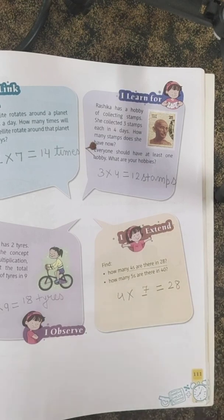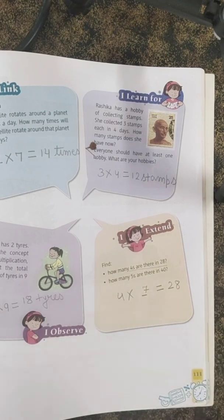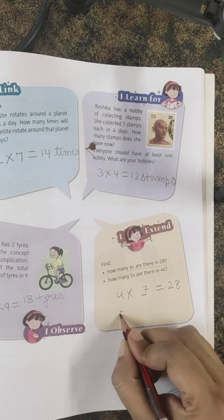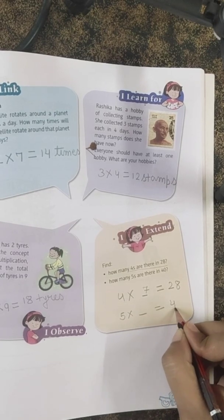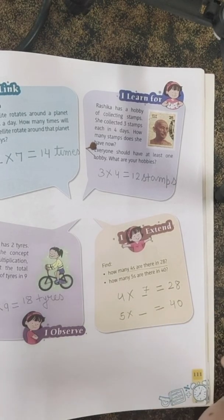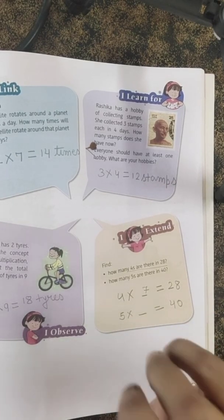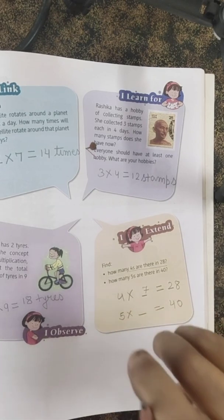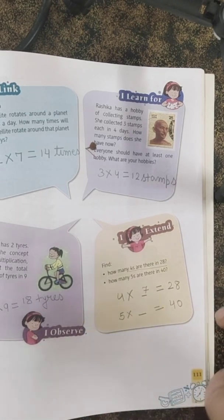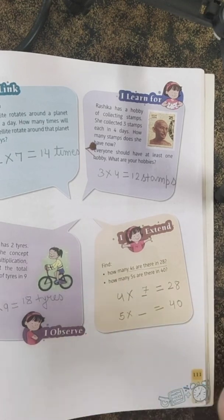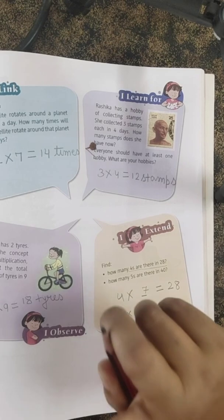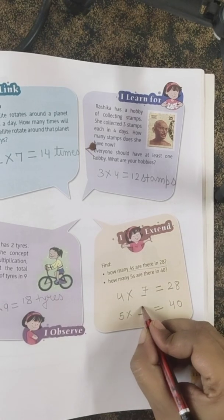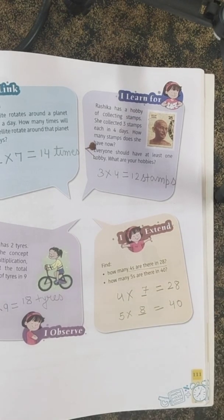How many 5s are there in 40? Let's say the table of 5: 5×1=5, 5×2=10, 5×3=15, 5×4=20, 5×5=25, 5×6=30, 5×7=35, 5×8=40. So there are eight 5s in 40.